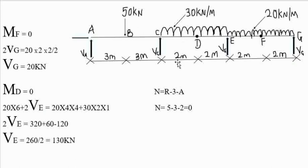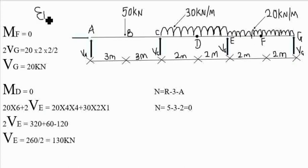Now let's go ahead to get the vertical reactions. You can't just take the summation of moments about point A or C because you will find too many unknowns. Since we have hinges, we can take moment at point F equal to zero. Remember there is a difference: the summation of all moments at a point differs from the moment at a hinge point F, which means moments from either the right or left side only.